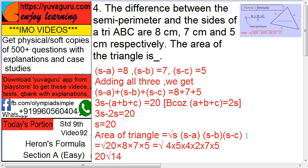See, this S minus A - now S is known, 20, and this difference is already given: 8, 7, 5. So what do you do now while finding the root? Make it to the lowest possible part: so 4 into 5, 4 into 2, and 7 into 5. So 4, 4 and 5, 5 out: root 20, root 14. That is the answer.